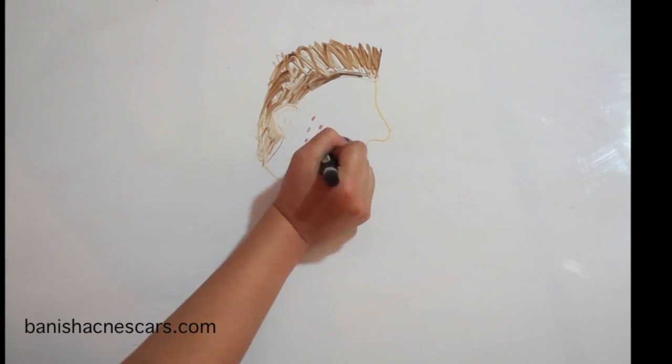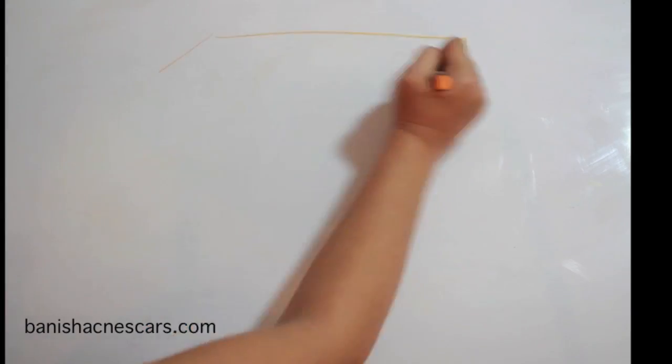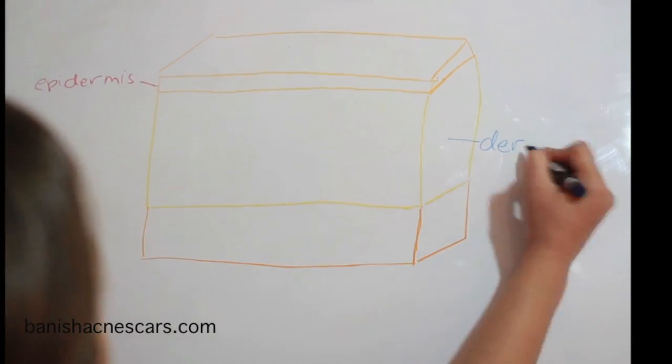What happens in both cases is the dermis or middle layer of skin is torn and a scar or mark appears. The dermis is responsible for keeping the shape of the skin.